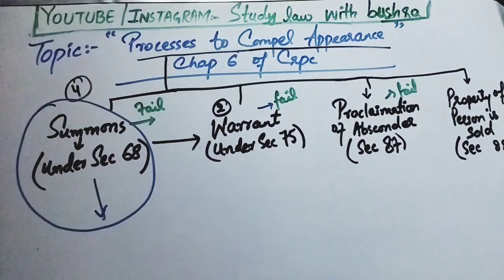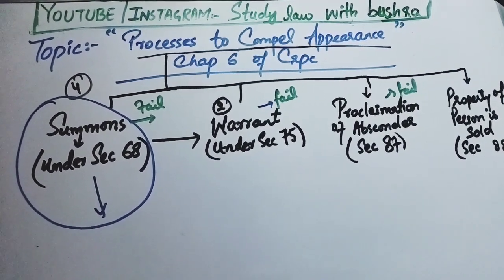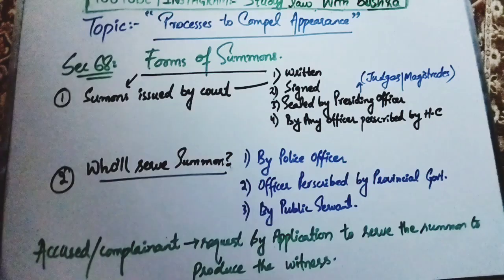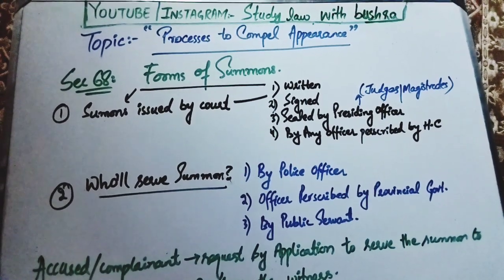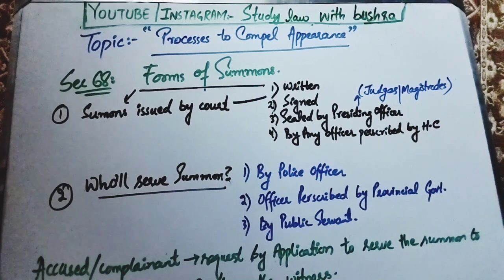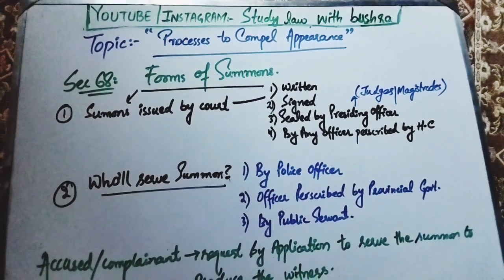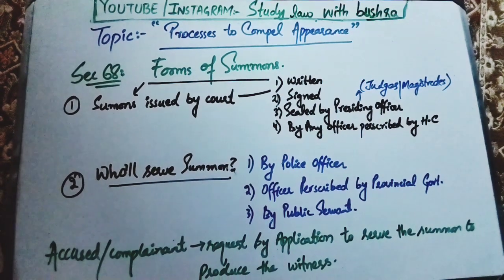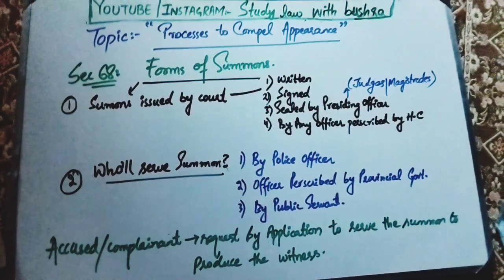In today's video we will deal only with the first process, from Section 68 to Section 74. Moving to Section 68 — Section 68 deals with the 'Form of Summon.' It states that for any summon issued by the court, four things are necessary.